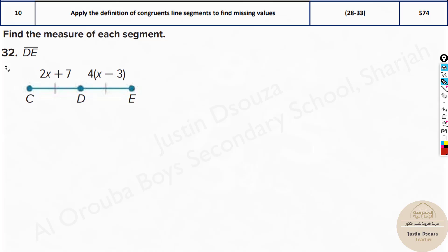Here they have told measure of DE needs to be found out. But we know CD and DE are congruent. So just equate these both. 2X plus 7 is equal to 4 times X minus 3. Now what you do is let's write the left side as it is. Let's use distributive property here. Multiply 4 inside the brackets. It becomes 4X minus 4 times 3 is 12.